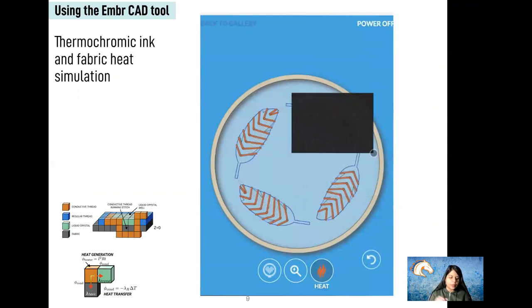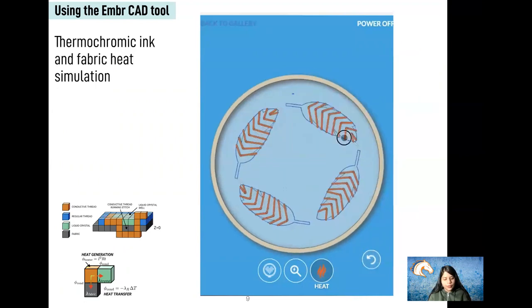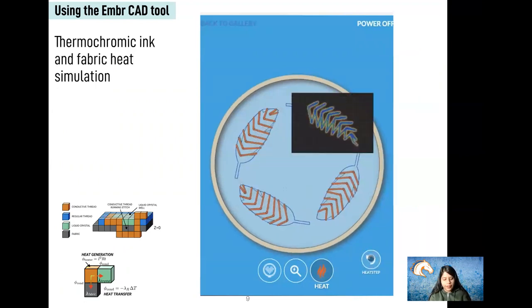The heat simulation model is used to simulate the thermal behavior of the thermochromic ink to allow the user to alter parameters to achieve their desired effect.